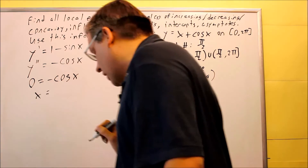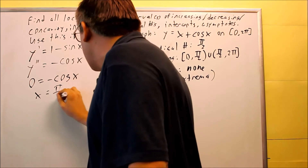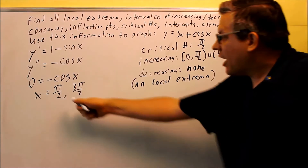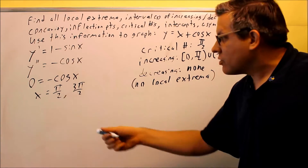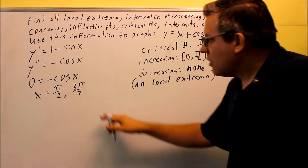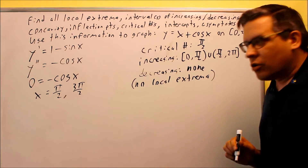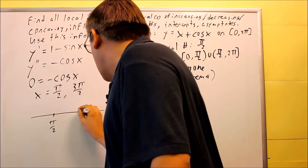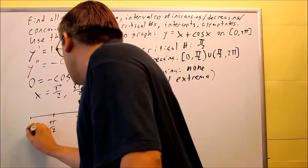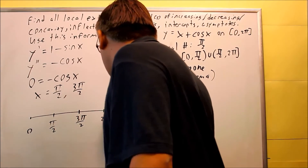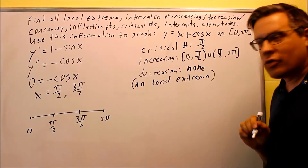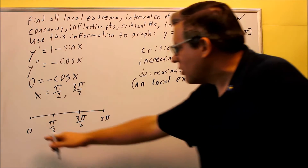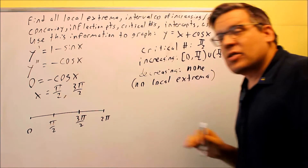Cosine equals 0 happens at two places. Looking at the unit circle, the x-value is 0 at pi over 2, which is 90 degrees, and at 3 pi over 2, which is 270 degrees. These are the two numbers that go on the number line for the second derivative. You should also note the endpoints 0 and 2 pi on your number line so you don't test values outside that range.